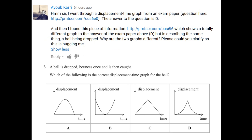So this is the question: a ball is dropped, bouncing only once and then is caught. Which of the following is the correct displacement time graph for the ball? Well the answer is D. That's the correct answer.